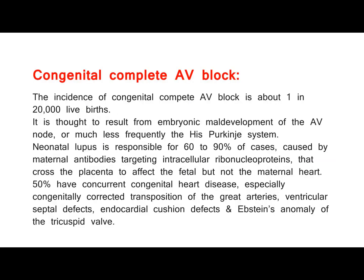Congenital Complete AV Block: The incidence of congenital complete AV block is about 1 in 20,000 live births. It is thought to result from embryonic maldevelopment of the AV node, or much less frequently the HIS-Purkinje system. Neonatal lupus is responsible for 60–90% of cases, caused by maternal antibodies targeting intracellular ribonucleoproteins that cross the placenta to affect the fetal but not the maternal heart. 50% have concurrent congenital heart disease, especially congenitally corrected transposition of the great arteries, ventricular septal defects, endocardial cushion defects, and Ebstein's anomaly of the tricuspid valve.